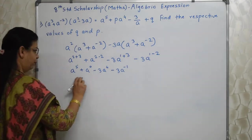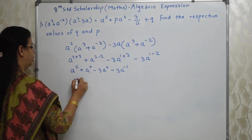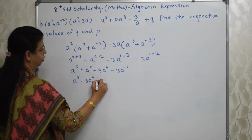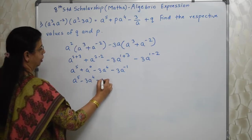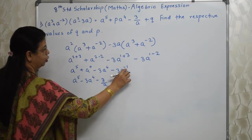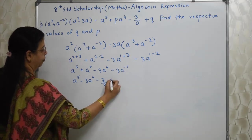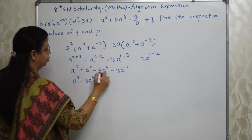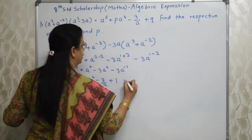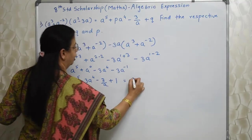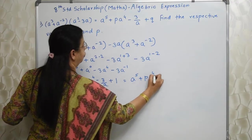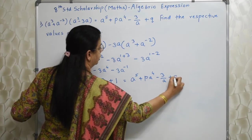This is same as, let's first arrange this in order as per the degree. A to the 5 minus 3A to the 4, then 3 upon A. This is A raise to minus 1 means 1 upon A. Then this is A raise to 0 is 1. The value of A raise to 0 is 1. This is same as they have given A raise to 5 plus P A raise to 4 minus 3 upon A plus Q.